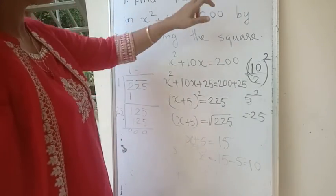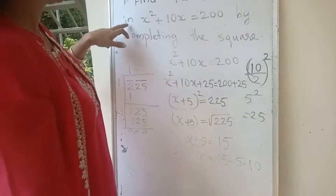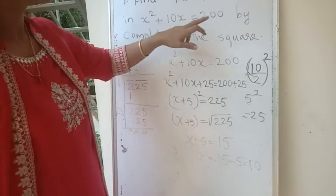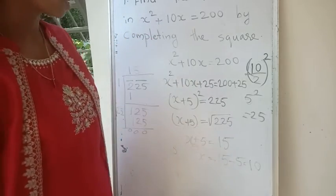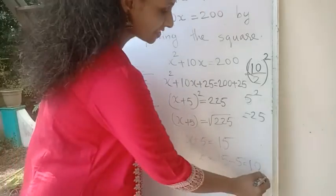Find the value of x in this equation by completing the square — the answer is 10.